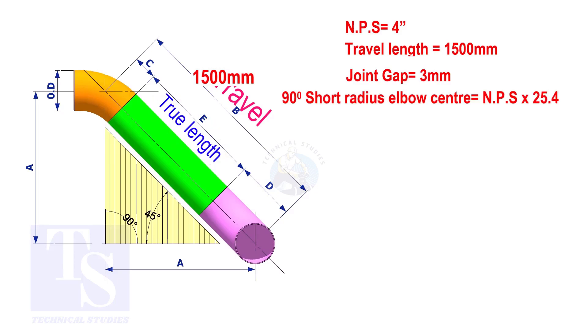To calculate the elbow center of a 90 degree short radius elbow, multiply the nominal pipe size by 25.4. The answer is 101.6mm.